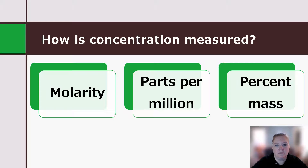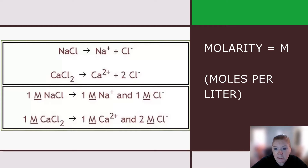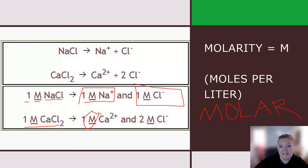We measure concentration three main ways: with molarity, with parts per million, and with percent mass. Molarity is capital M and stands for moles per liter. If I have a 1 molar NaCl solution, that means I have 1 molar of Na⁺ and 1 molar of Cl⁻. Whereas if I have 1 molar of CaCl₂, I have 1 molar of Ca²⁺ but 2 molar of Cl⁻.